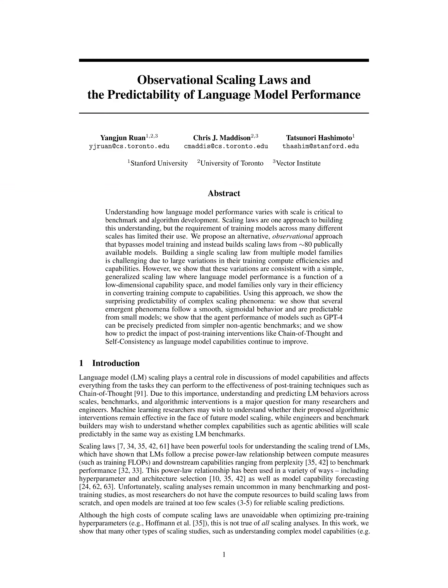Next, the method involves fitting regression models using the PC measures to predict downstream error metrics that measure LM capabilities. The regression weights and bias are determined through ordinary least squares regression, with a sigmoidal scale function applied to account for potential discrepancies in performance. The fitted regression models allow for accurate predictions of LM capabilities, even when using models with weaker performance.